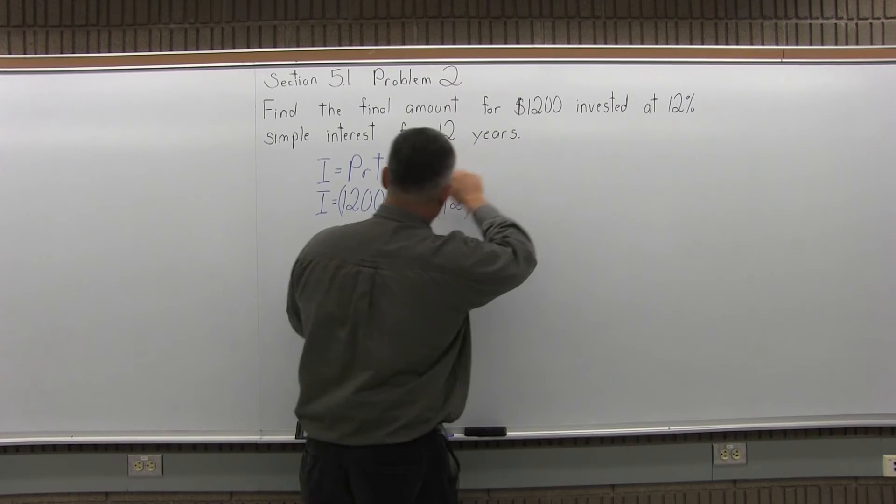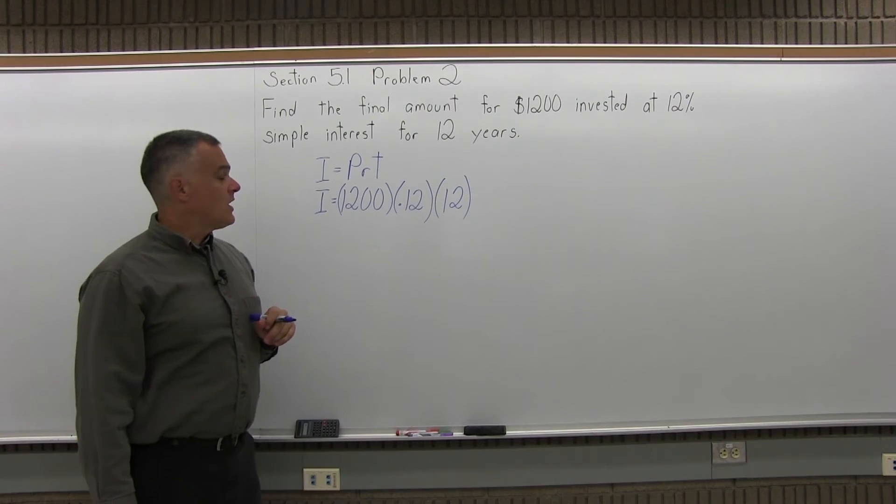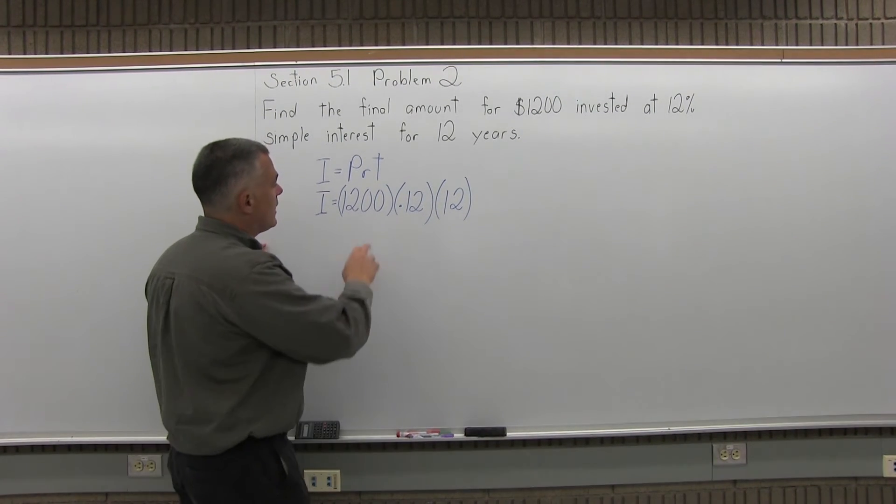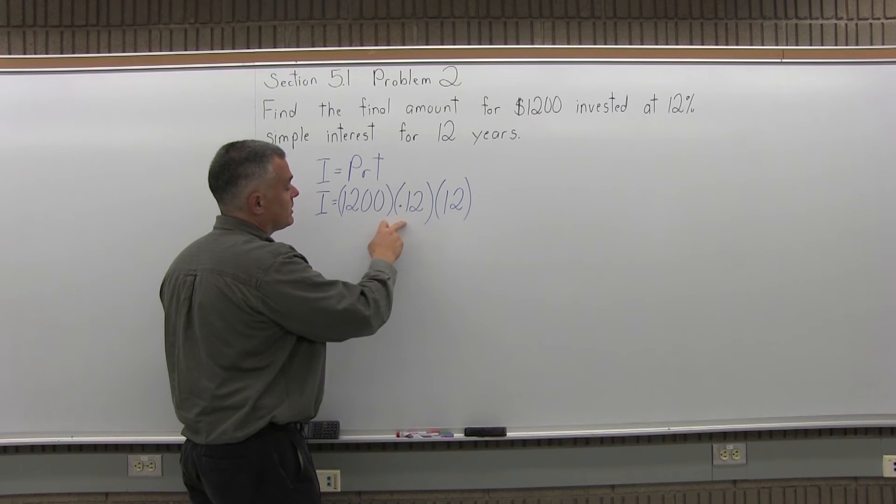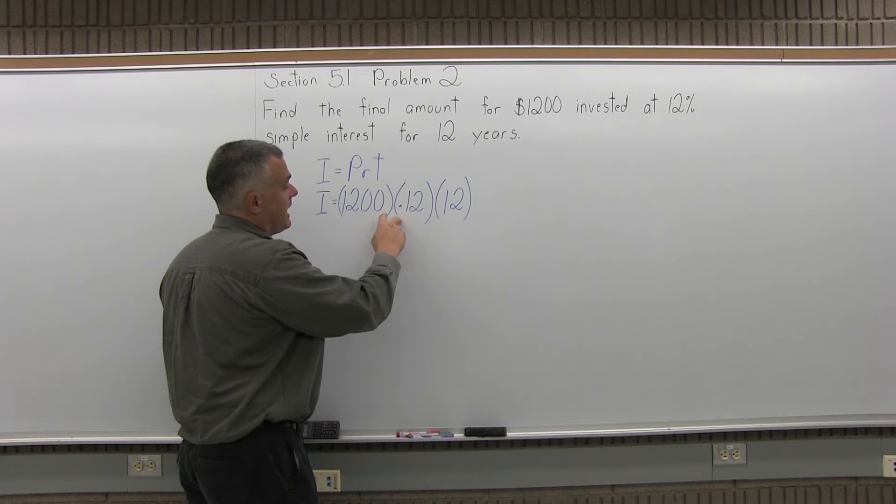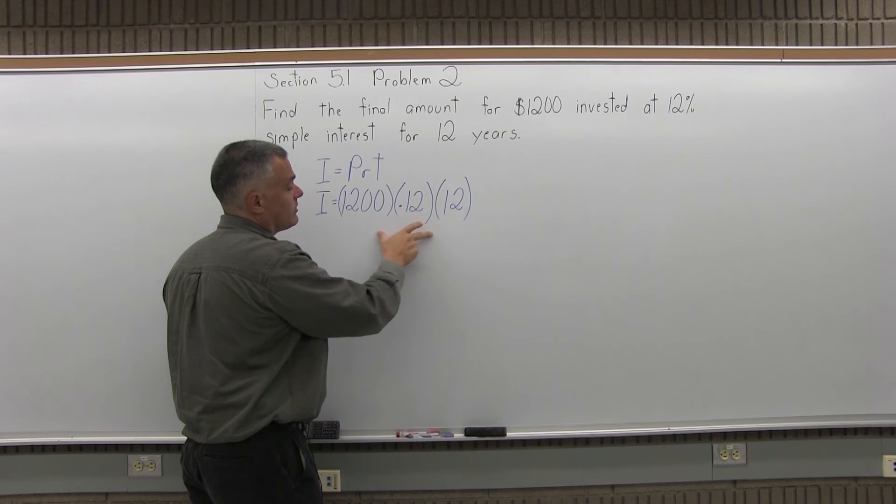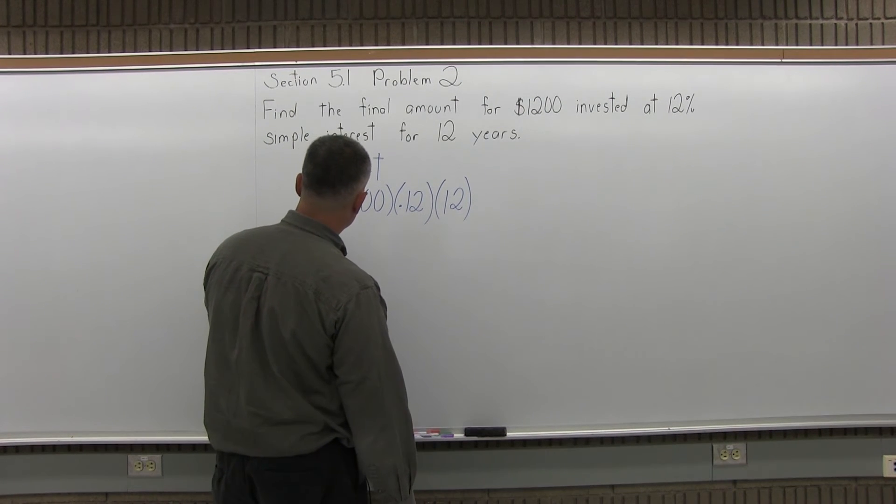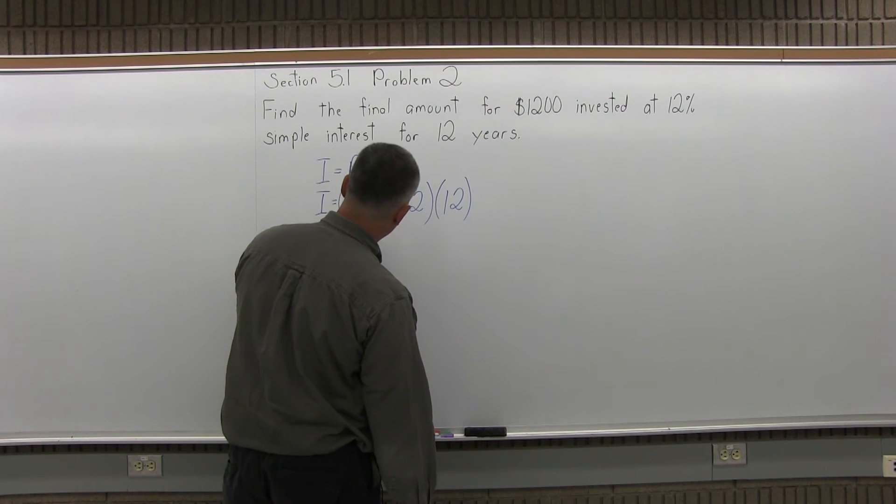So we have a lot of 12s in this problem, like everything's a 12. Now you can multiply that out. 1200 times .12 is 144, and then times 12 again, 144 times 12, the interest earned is $1,728.